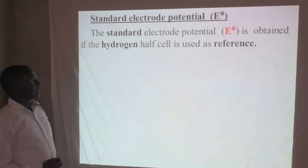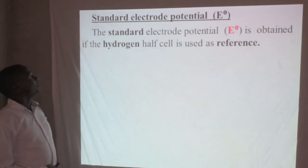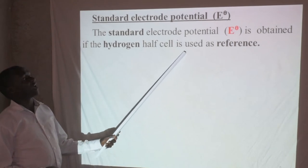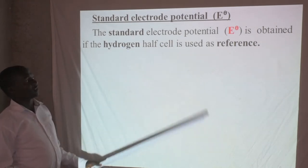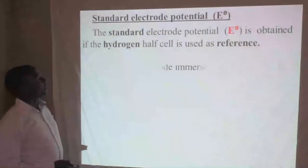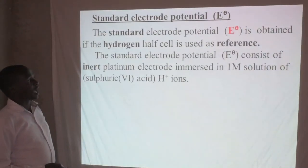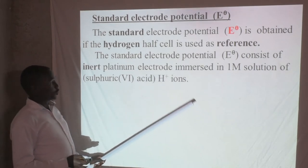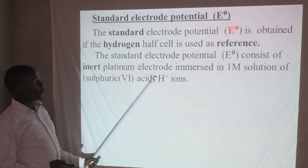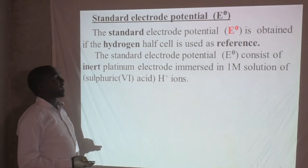So what is this standard electrode potential? Standard electrode potential is actually obtained when the hydrogen half cell is used as a reference electrode. The reference means the point from which you move to the left or right hand side — that is the reference point. This standard electrode setup consists of a platinum electrode immersed in a one molar solution of sulfuric acid, identified by its hydrogen ions.